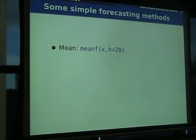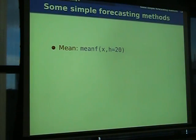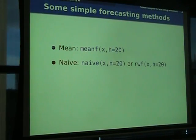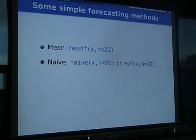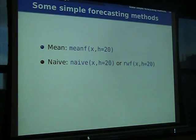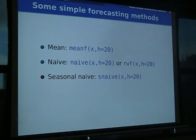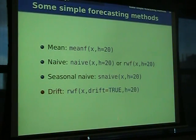In R, provided you've got the forecast package loaded, you can get any of these very easily. meanf() gives you the mean, H steps ahead. naive() or rwf() — which stands for random walk forecast — gives the naive. snaive() gives seasonal naive, and rwf() with drift gives the random walk with a drift term.